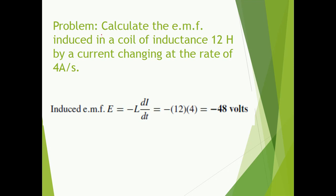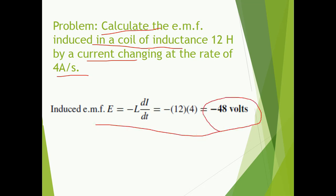There is a numerical: calculate the EMF induced in a coil of inductance 12 Henry by a current changing at the rate of 4 ampere per second. dI/dt is already given as 4, and inductance L is given as 12 Henry. So the induced EMF comes out to be minus 48 volts.